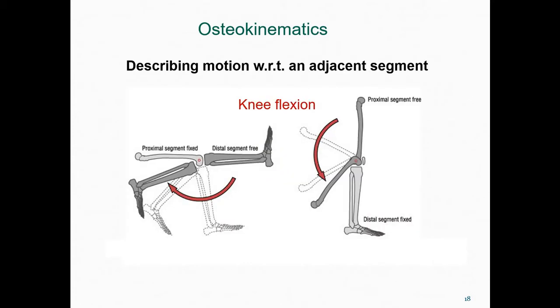Osteokinematics refers to movement of the bones. Talking effectively about how the body is moving requires precise language shared by the people you're talking to. Consider describing how one limb segment is moving relative to another. We have two cases of knee flexion that are superficially similar, but functionally very different. In the first movement, the proximal segment — the femur — is fixed, and the distal segment, the tibia, is moving relative to it. This might be a person swinging their leg underneath a chair or back-heeling a soccer ball.